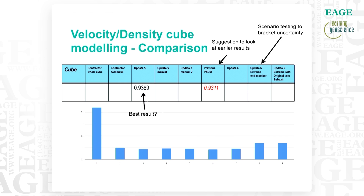We also tried some end-member testing — looking at crash cases and extreme interpretations — to reassure ourselves and build confidence that our solutions were unique and that there were not others equally possible. We also had a look at changing some of the sub-salt assumptions, which seemed to have actually little impact on the final result.